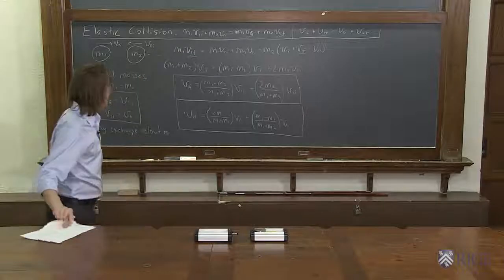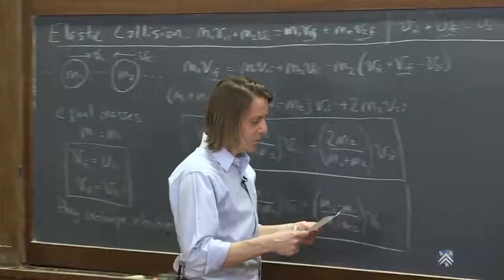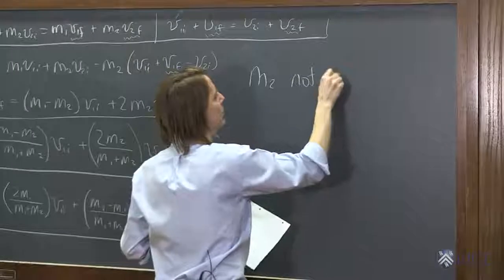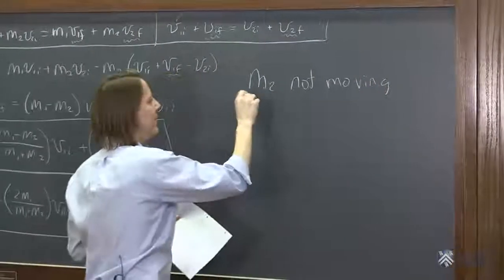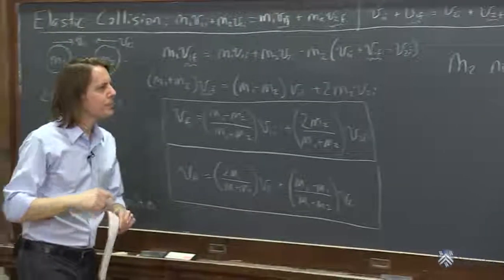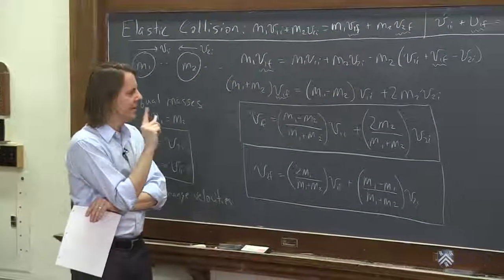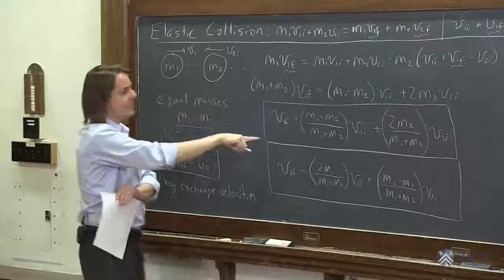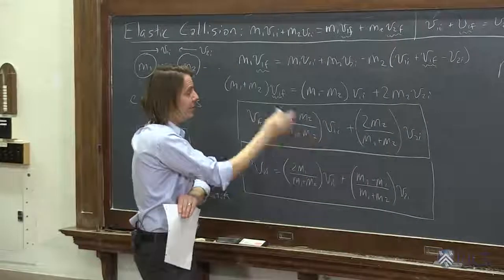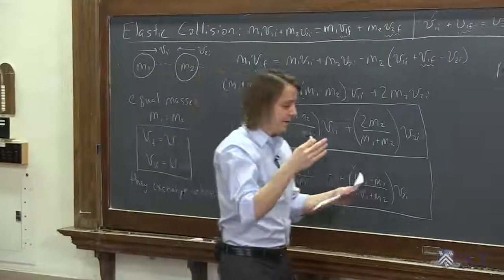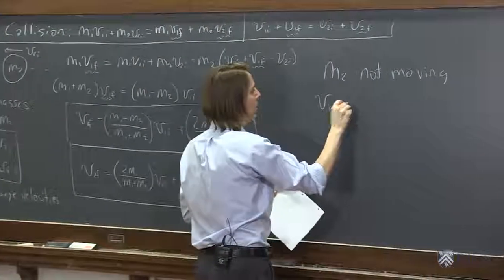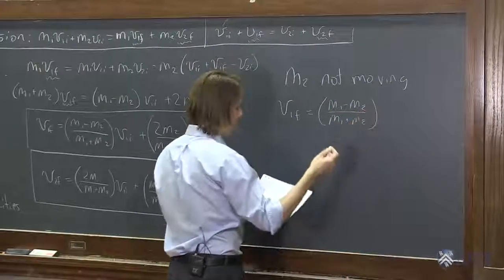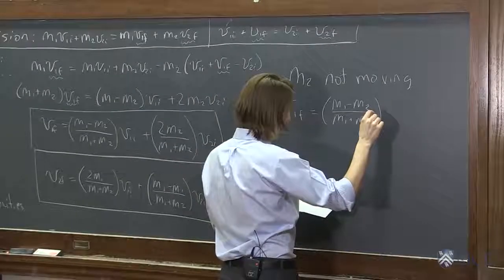Let's look at another insight that we get from these equations. What if m2 is stationary, is not moving? We did sort of one case of that here, but let's look at it more carefully. Now the masses are not necessarily equal. But m2 is not moving. That means v2i is 0. So that's just going to simplify this. It's going to take away this term. So then you're going to say velocity 1f equals m1 minus m2 over m1 plus m2 times v1i.